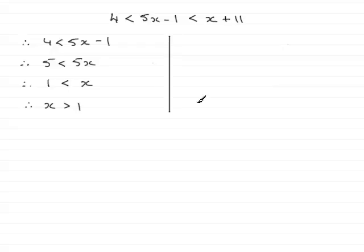Now we look at the other inequality, 5x - 1 < x + 11. In this one, let's start by adding 1 to both sides. If we add 1 to both sides, we're left with 5x, and that is less than x + 12.